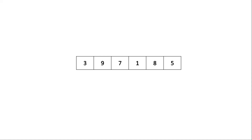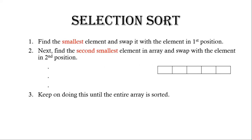Hello and welcome everyone. In the series of sorting algorithms, our next algorithm is selection sort. Given an input array, we have to convert it into a sorted array in ascending order. In selection sort, first we find out the smallest element throughout the array and put it at its right position. Next, we find the second smallest element and put it into the second position, then the third smallest element at the third position.